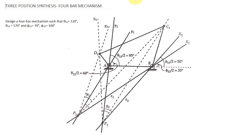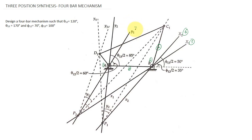Let me explain the figure once again. First, fix point A, then fix point B, and join line AB at an arbitrary length. Then draw link BC1 as your output link. After that, draw line x1 at angle φ12/2 = 35°, and line x2 at angle φ13/2 = 50°. Then draw lines y1 and y2 at angles θ12/2 and θ13/2 respectively.